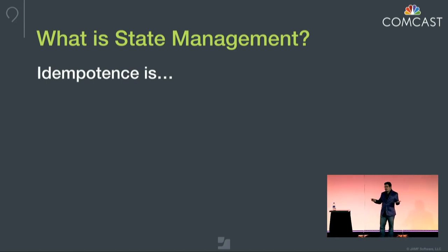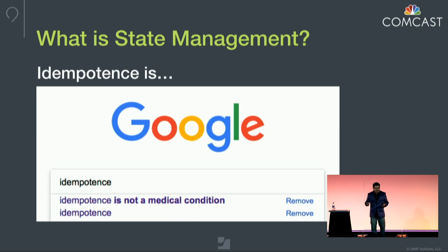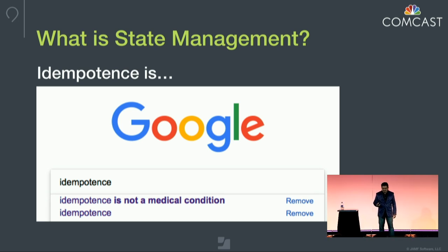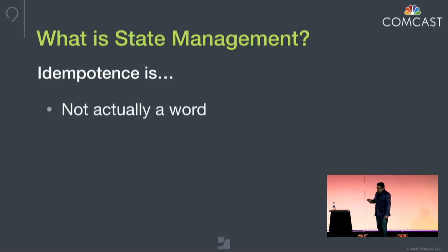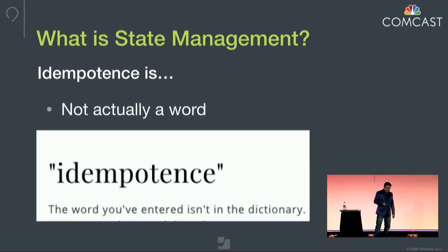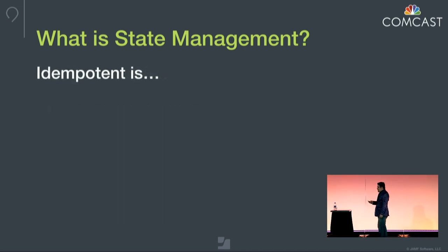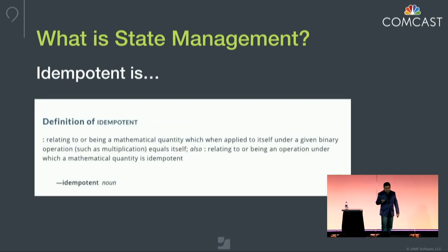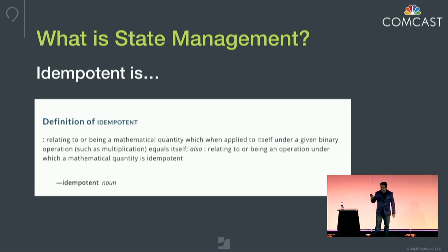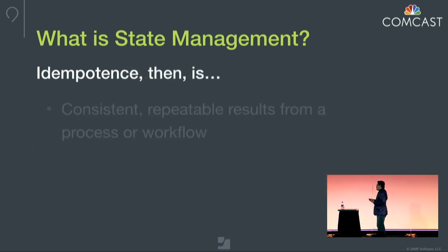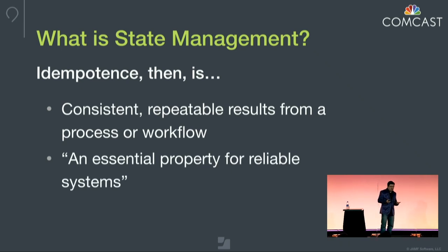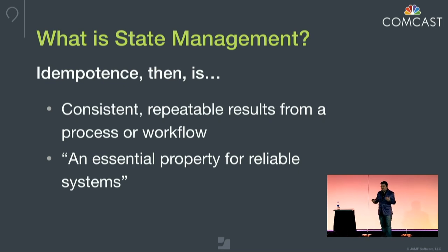Idempotence — if you do a Google search, this is what usually pops up. It's actually a very serious technical paper written by Pat Halland talking about how message delivery guarantee is important. Idempotent means relating to or being a mathematical quantity which applies to itself under a given binary operation. In plain English, I translate that to consistent, repeatable results from a process or workflow. As quoted from Pat Halland's paper, it's an essential property for reliable systems.